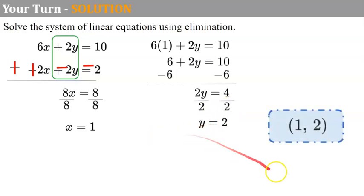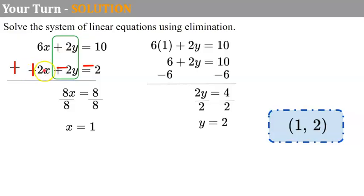Our ordered pair, our solution, is (1, 2). Let's check: 6 times 1 is 6 plus 2 times 2 is 4, and 6 plus 4 is 10. The second equation was negative 2x: negative 2 times 1 is negative 2 plus 2 times 2 is 4; negative 2 plus 4 is positive 2 — so it checks. Remember, the negative sign was from subtracting one equation from the other, which is why I always write it in red.